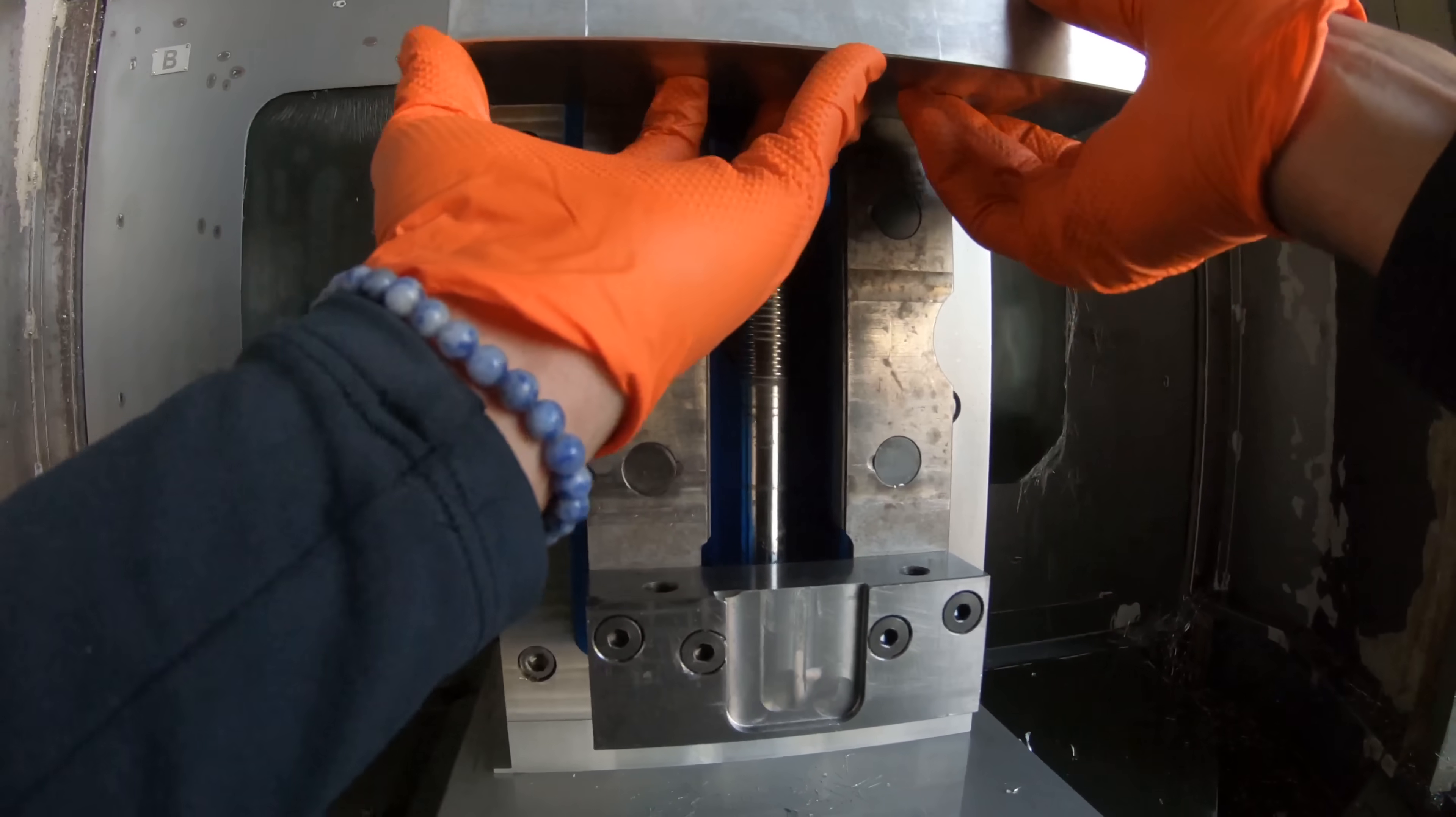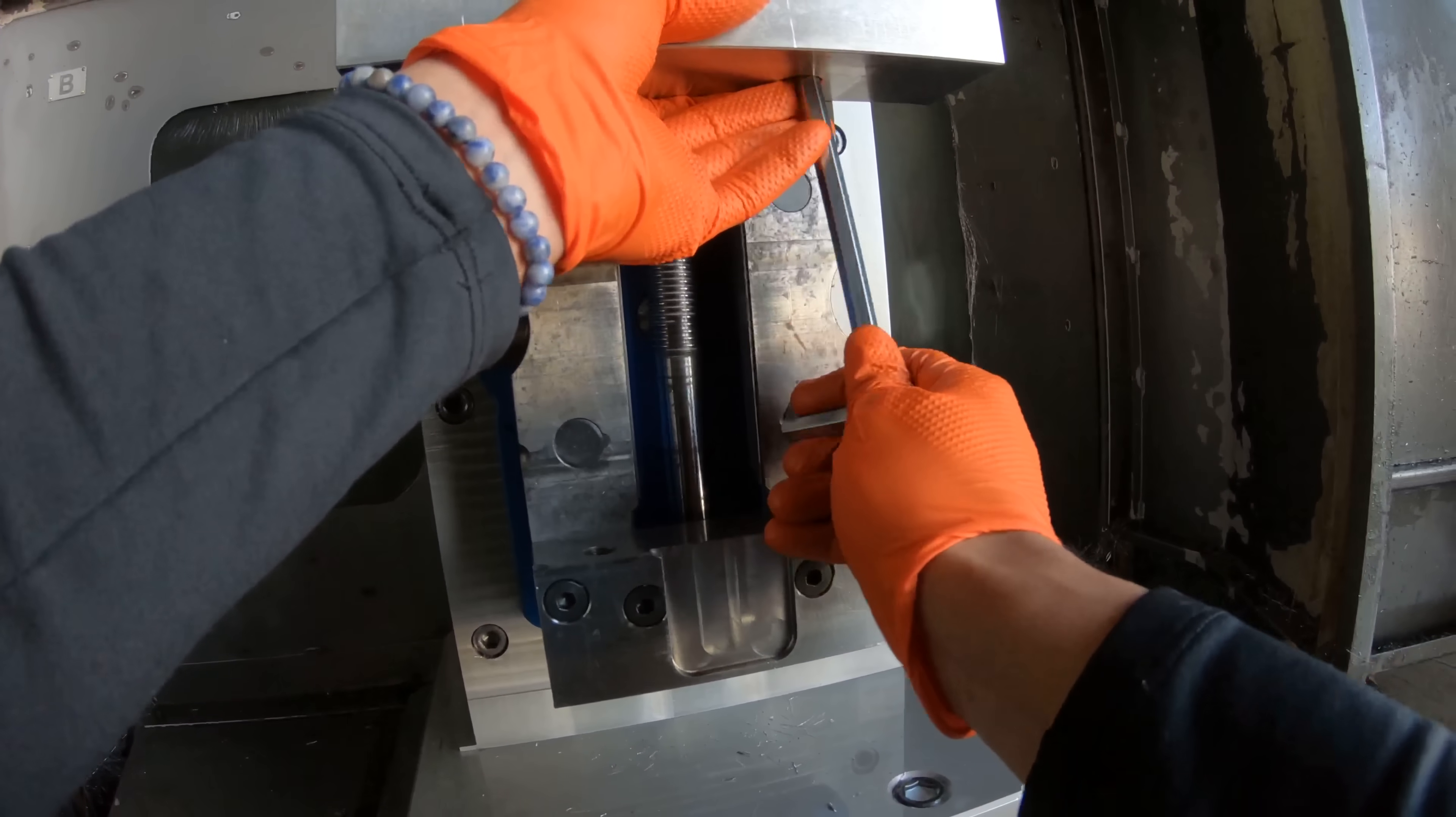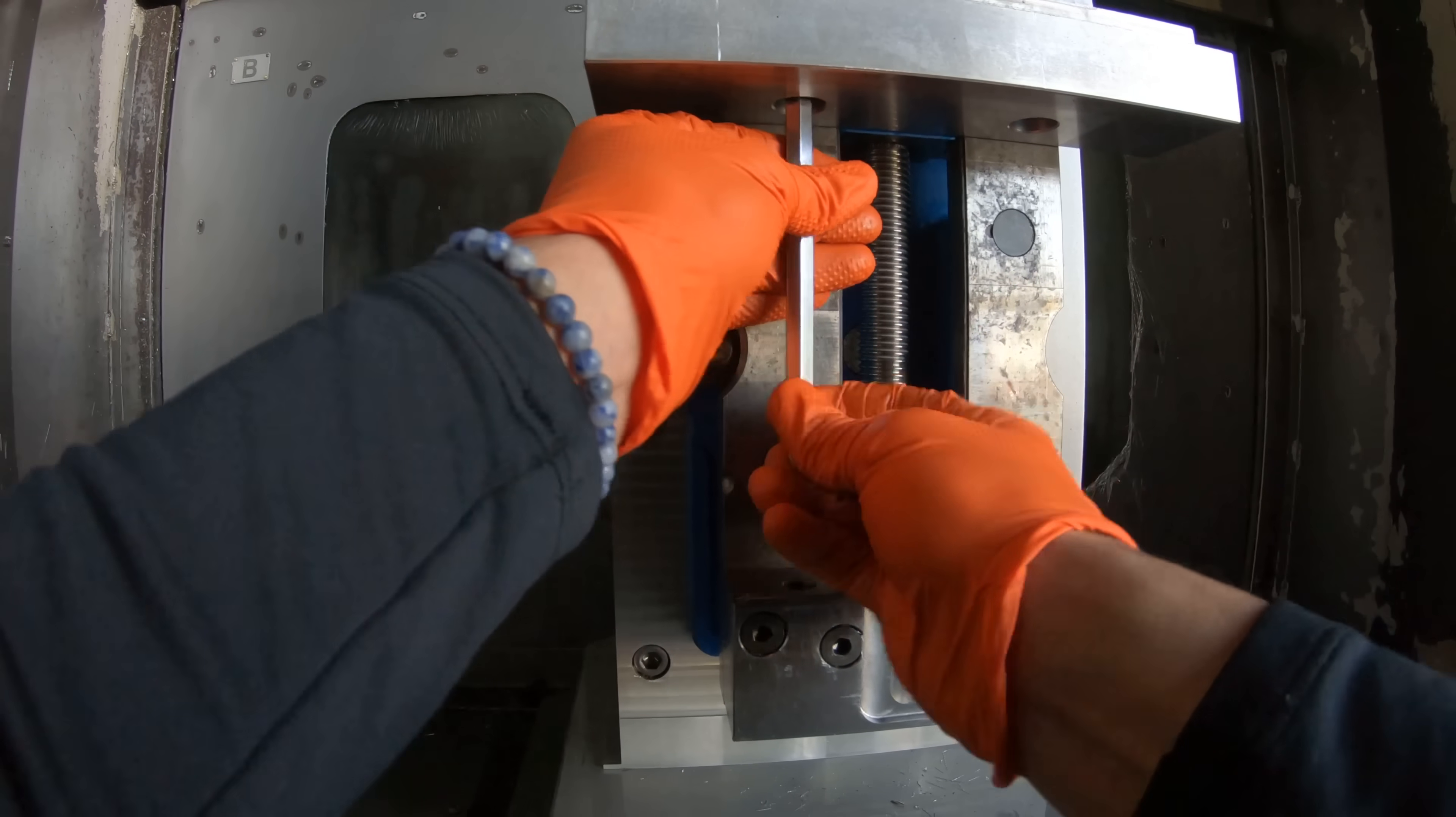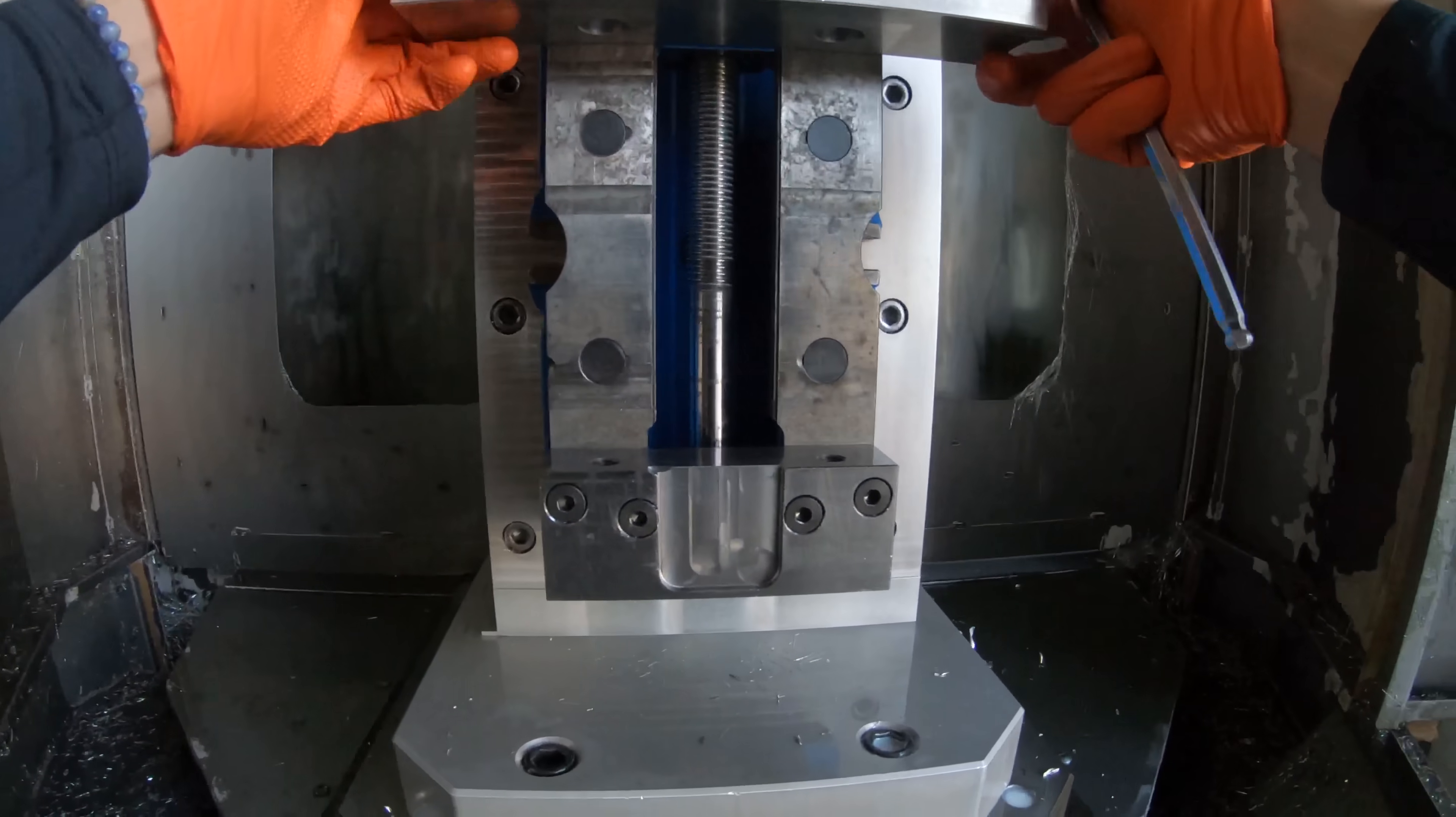So I'm just going to get these new set of jaws—well, jaws that we had that are going to work for this—I'm going to get them set up here in the vise. And this was all mapped out in CAD. I drew out my jaws with the part overlaying them and saw what clearance I had and stuff, how much I had to clamp onto.